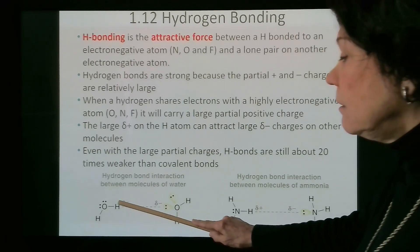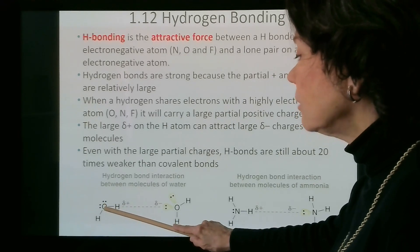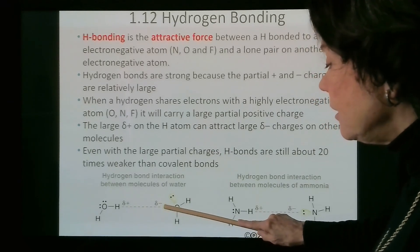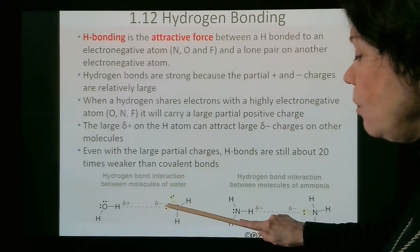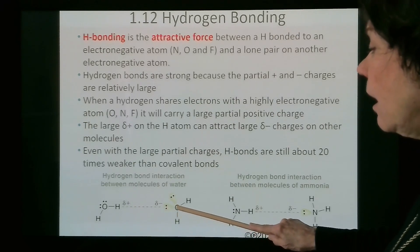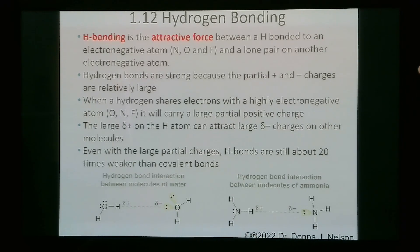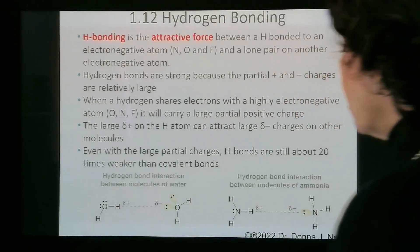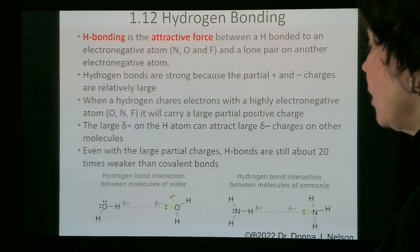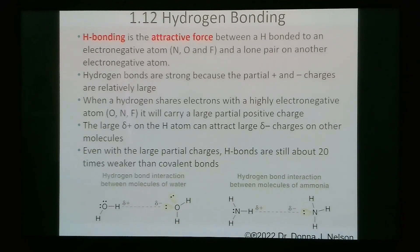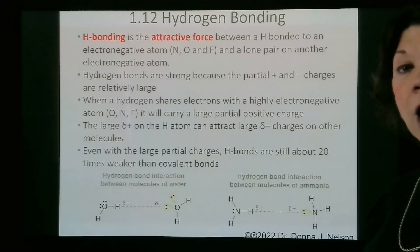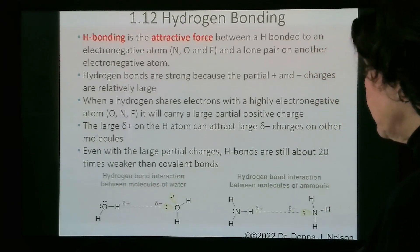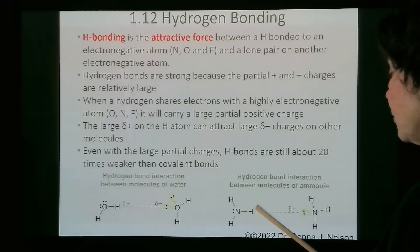There is a large partial positive on this hydrogen bonded to oxygen, and it is attracted to the partial negative created by the electrons in the lone pair on oxygen. Even with these fairly large charges, hydrogen bonds are still about 20 times weaker than covalent bonds — although hydrogen bonding is the strongest of the intermolecular forces in organic chemistry.